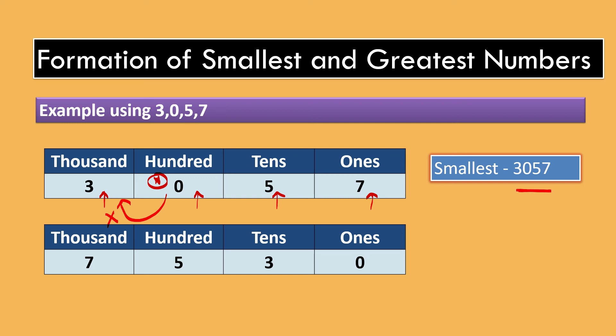Now, to form greatest number, we will place 7 at 1000, 5 at 100, 3 at 10s, 0 at 1s. So, greatest number formed is 7530.